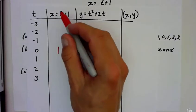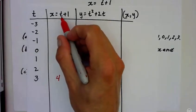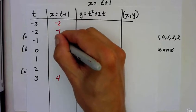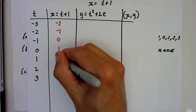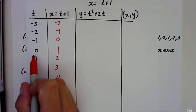For example, t is three, three plus one is four. So again, x is always one more than t. So that means negative two here, negative one, zero, one, two, three, four. And each one of these x values is one more than the t value.